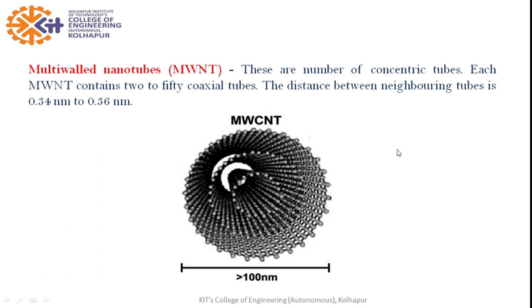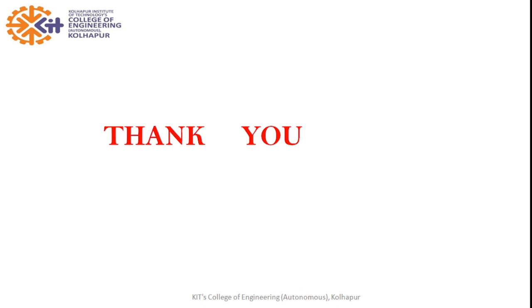So we have seen what graphene is, what a carbon nanotube is — the rolled-up sheet of graphene — and based on orientation there are three types: armchair, zigzag, and chiral, and two types: single-walled and multi-walled. In the next video we shall discuss different properties and applications of carbon nanotubes. Thank you.